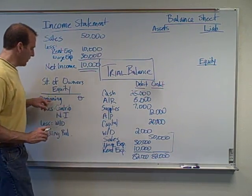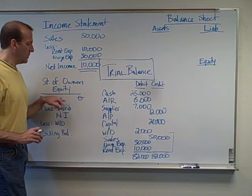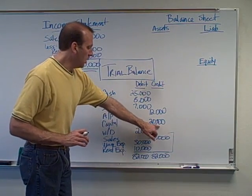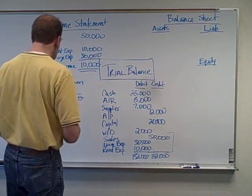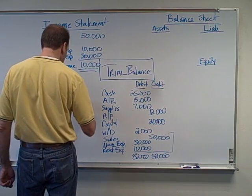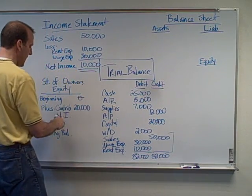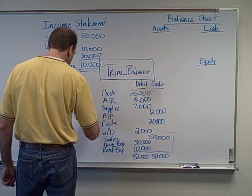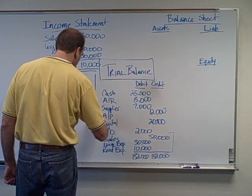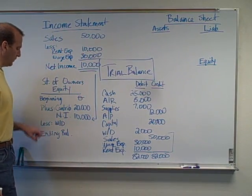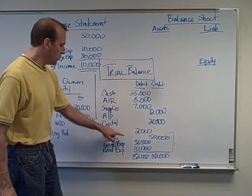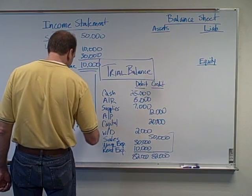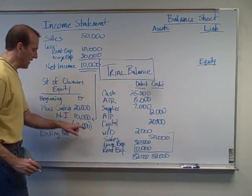This was a brand new company, so we start with a beginning capital balance of zero. During the time period, the owner contributed $20,000 to the business. We add the net income of $10,000 — that's where we're getting that $10,000 — and then less the withdrawal of $2,000, which is a debit balance, shown in parentheses to indicate we subtract it.